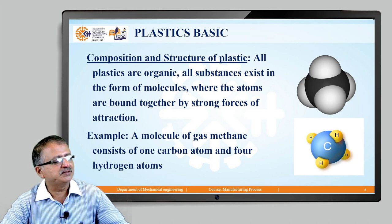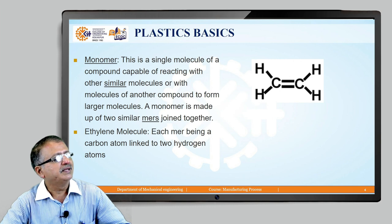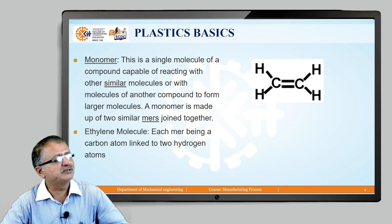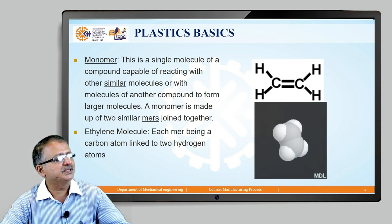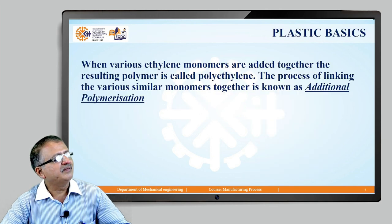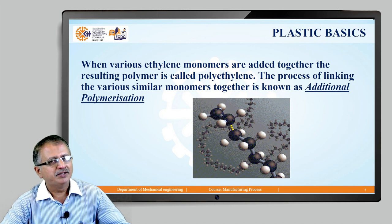A molecule of gas methane is shown, consisting of one carbon atom and four hydrogen atoms. This single molecule of a compound is capable of reacting with other similar molecules, and when they connect they form a larger molecule. A single molecule is called a monomer, and when monomers are joined — as shown with the ethylene molecule, where a single carbon atom is linked to two hydrogen atoms — various ethylene monomers joined together form a polymer. The resulting polymer is called polyethylene, and the process of linking similar monomers is called addition polymerization, as shown in the diagram.